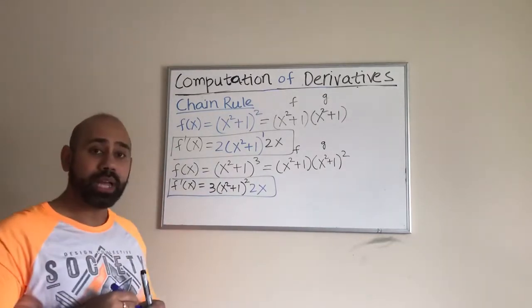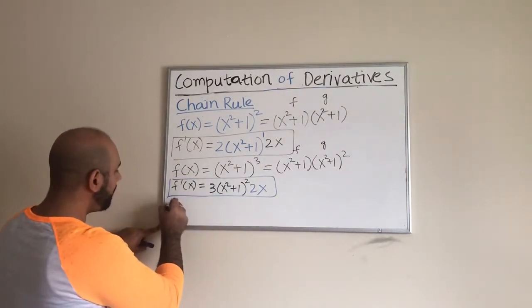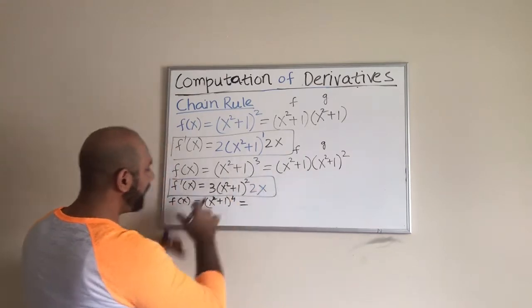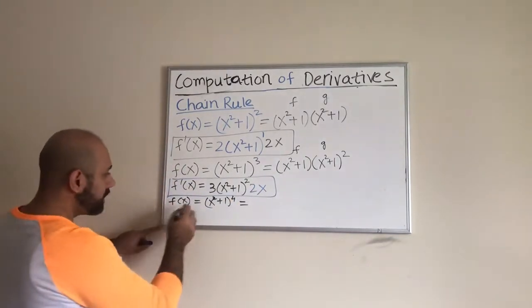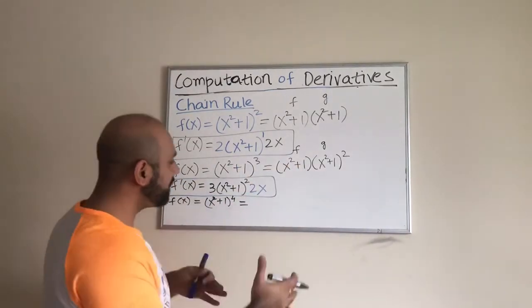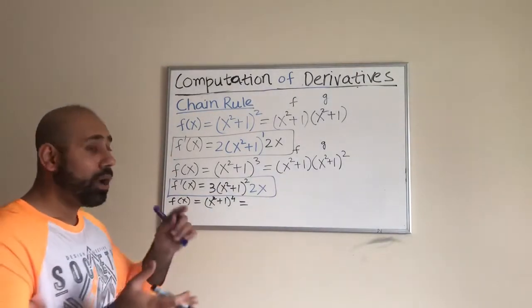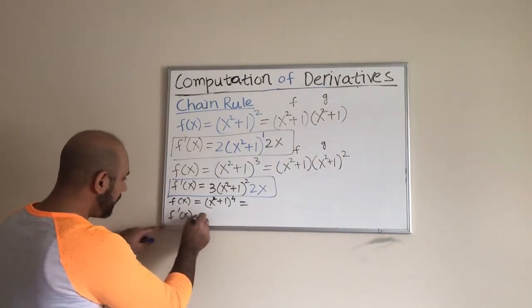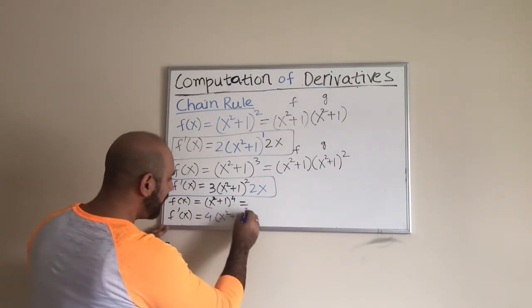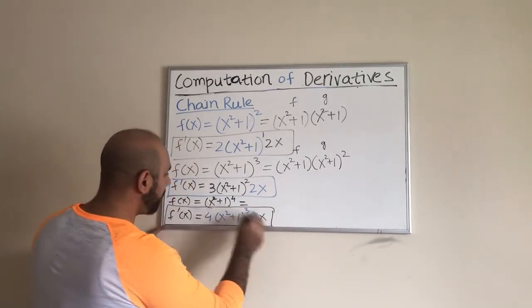Let us go one step further and look at f(x) = (x² + 1)⁴. Again, if we break it down — say (x² + 1)² times (x² + 1)² or (x² + 1)³ times (x² + 1) — all those ways require the product rule and the power rule. Finally, the derivative we get is 4(x² + 1)³ times 2x. If you try (x² + 1)⁵ or ⁶ or ⁷, you will still get a 2x at the end.